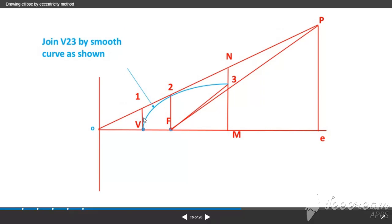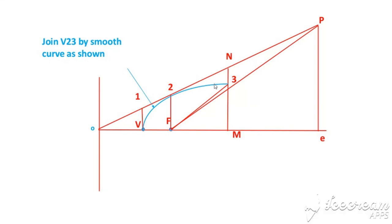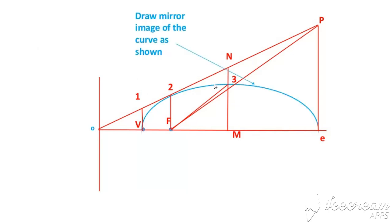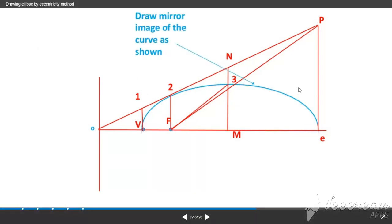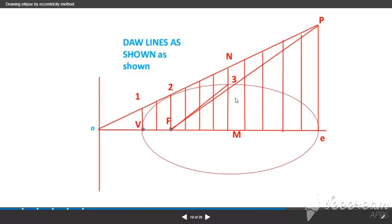Join V23 by smooth curve as shown. You can join this curve or draw this curve with the help of a French curve. Next, draw the mirror image of the curve as shown on the other side.